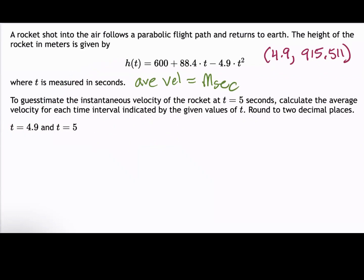Now to determine the second point, we substitute t = 5 into the height function. And this gives us h(5) = 600 + 88.4 × 5 - 4.9 × 5². And plugging the right side into a calculator gives us h(5) = 917.